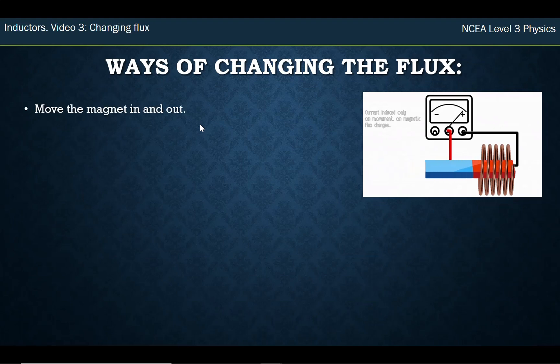There's different ways we can change the flux. This diagram shows a magnet moving in and out of the coil. But we could hold the magnet steady and move the coil over and then back out again. So we can move the coil back and forth.